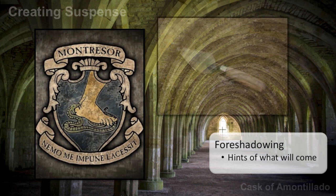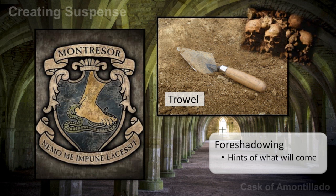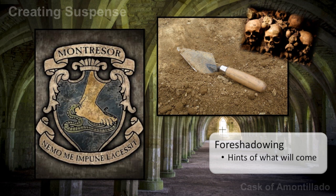The talk of masonry also foreshadows events. Fortunato asks whether Montresor is a mason, and here Montresor answers with a visual pun — he shows him his trowel, which means that he is a real stonemason. That is, he constructs things out of stones and mortar — namely in this story, Fortunato's grave. So there is lots of great foreshadowing that creates suspense, because it makes us understand that something horrible will happen.